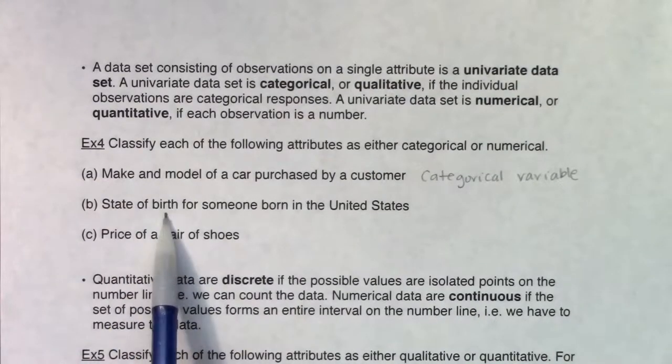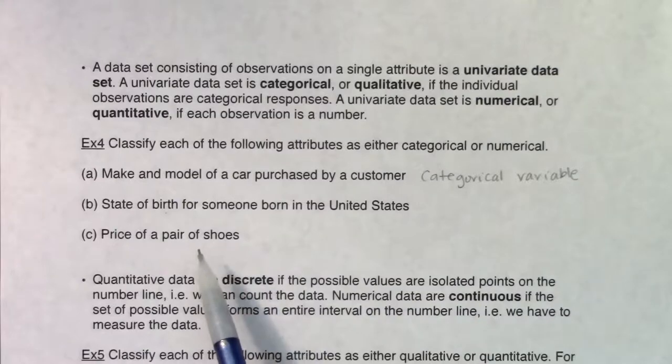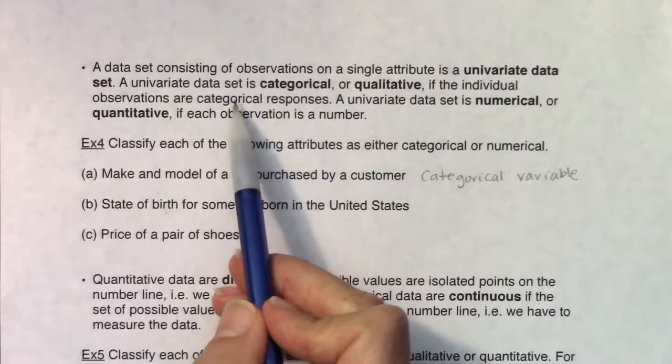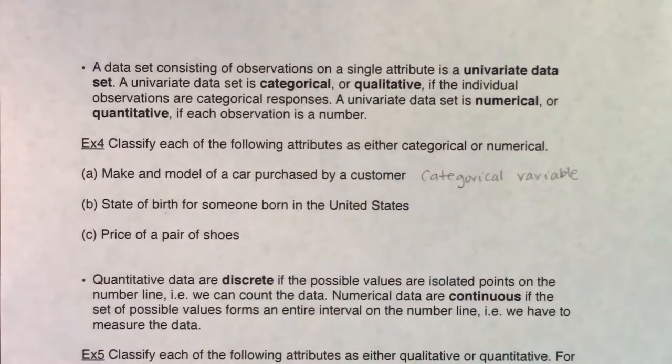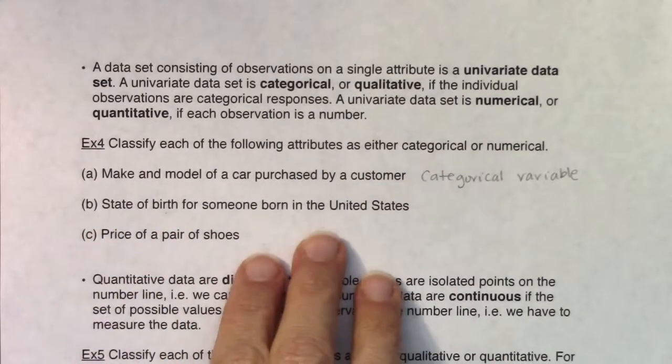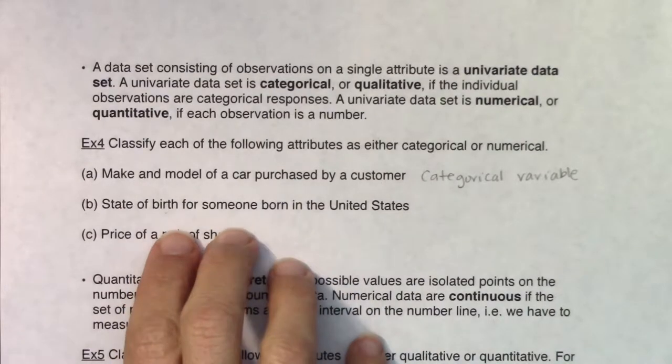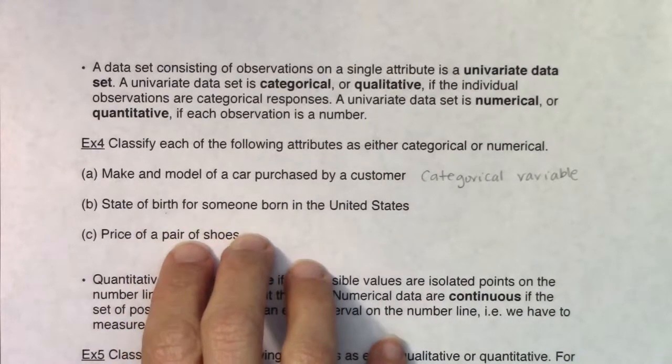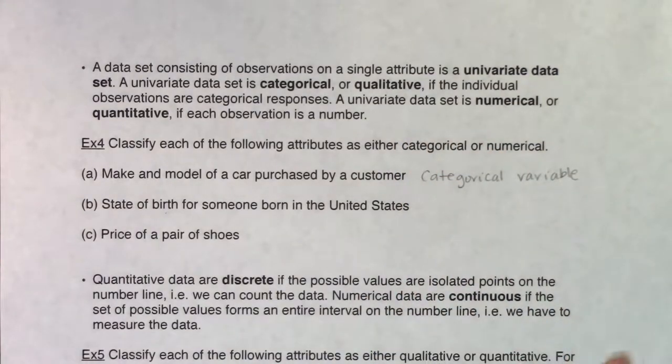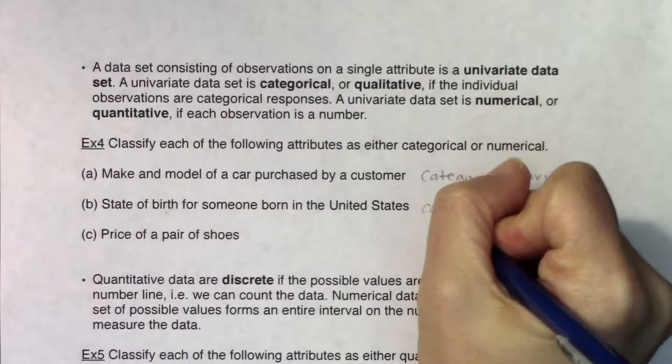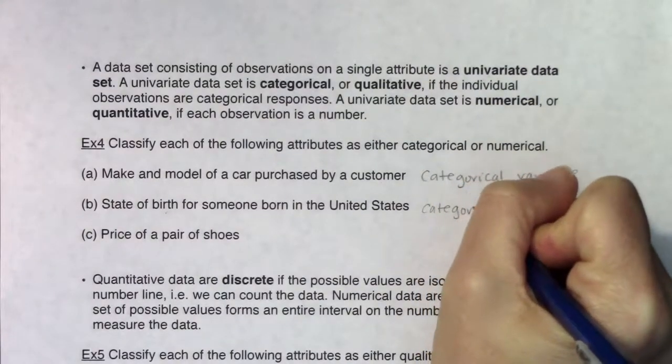In terms of the state of birth, I could go around the classroom and ask each of you, what state were you born in? Are you going to give me a categorical response or a number? This is not numerical. I would not ask you which state were you born in? Two. That's not going to be an answer. You're going to tell me California or Michigan or I wasn't born in the United States. So we've got a categorical variable.